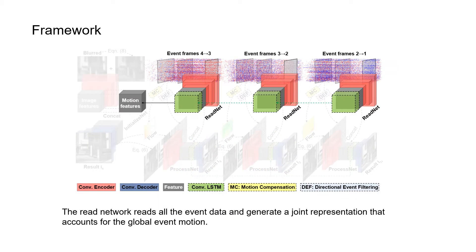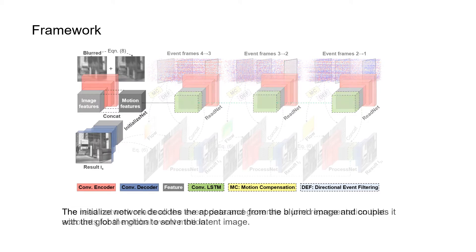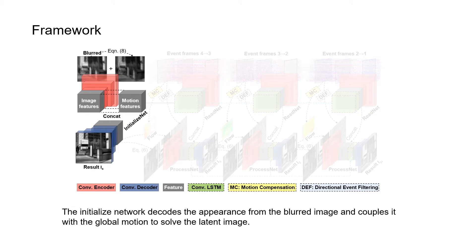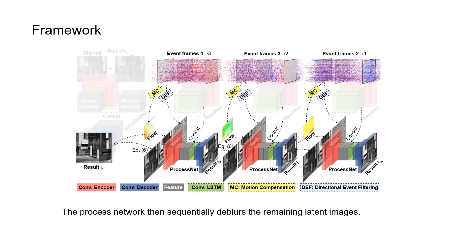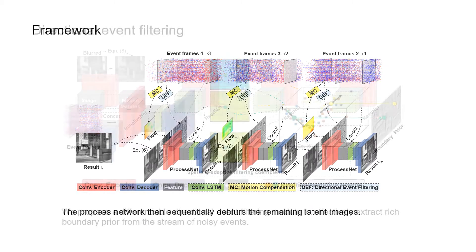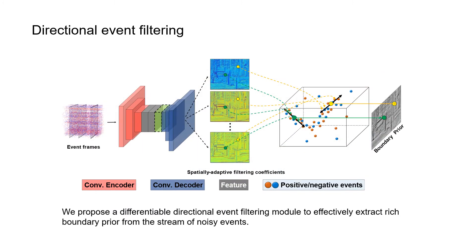We present a novel deep learning model to recover a video from a motion-flared image by using the temporal information encoded by events. The model includes three sub-modules: the read network, the initialized network, and the process network. To generate sharp boundaries, a filtering module is proposed for extracting rich boundary prior from noisy events.